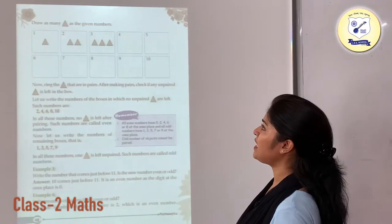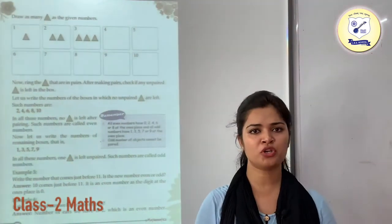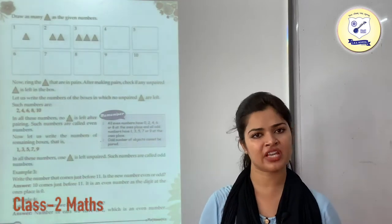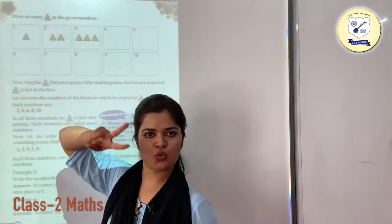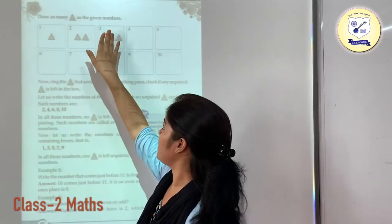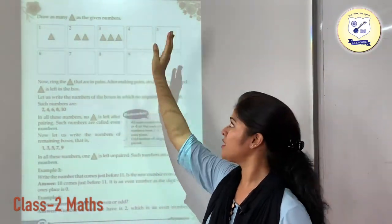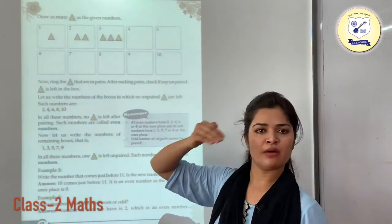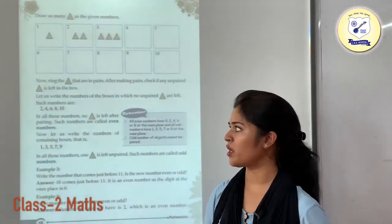Draw as many triangles as the given number. You just need to make triangles according to the number given to you. Like here 1 is written so we have made 1 triangle, 2 is written so we have made 2 triangles, here we have made 3 triangles since 3 was given. Similarly you can make the number of triangles in the boxes given to you according to their number.